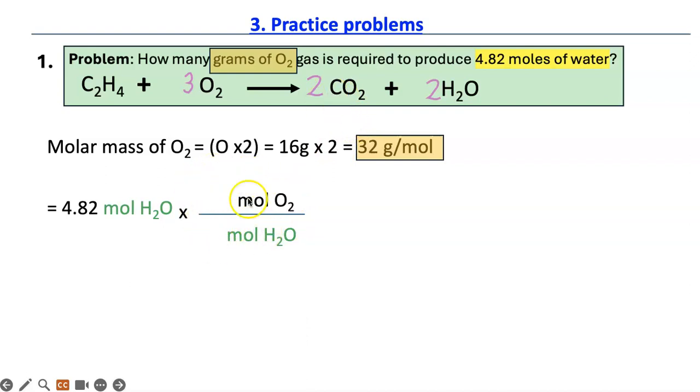Here is where you put the mole to mole ratio from the balanced equation. So water will be 2 and oxygen will be 3. And then you cancel out moles of water with moles of water.